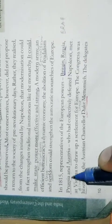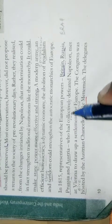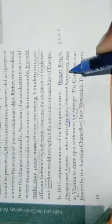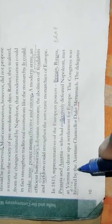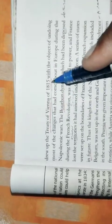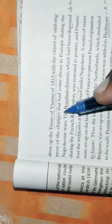One such important individual was Italian revolutionary Giuseppe Mazzini. Born in Genoa in 1807, he became a member of the secret society of the Carbonari. As a young man of 24, he was sent into exile in 1831 for attempting a revolution in Liguria. He subsequently founded two more underground societies: Young Italy in Marseille, and Young Europe in Bern, whose members were young men from Poland, France, Italy, and the German states.